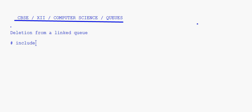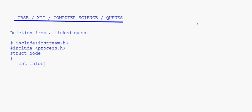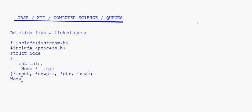We have the structure node with int info and a pointer called link. Then we have the front pointer, new pointer, and ptr — these are the pointers we need. The node pointer create new node function is also declared here.